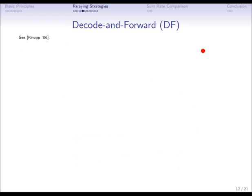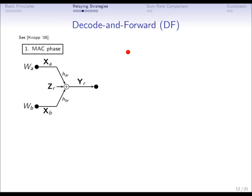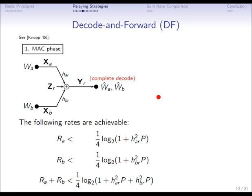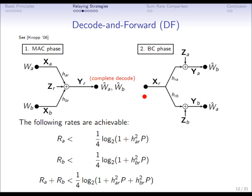The second strategy is called decode and forward, which is that now the MAC phase here looks the same, but now it's different in terms of now the relay tries to completely decode the messages. It tries to be completely aware of the messages of the two users. This is just a classical multi-access channel of information theory. The capacity region is completely characterized. Here I'm just applying this region for the definitions that I made.